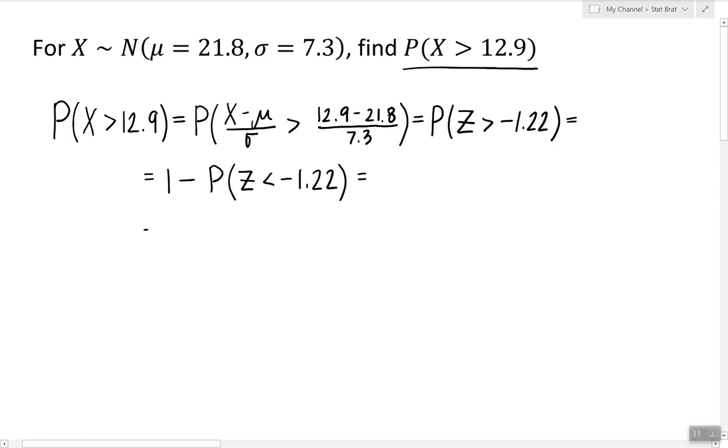And then we are going to look in the table for the row negative 1.2 and the column 0.02 to find the probability of z being less than this number which is 0.1112 and at the very end we just have to subtract this number from 1. So the final answer is 0.8888.